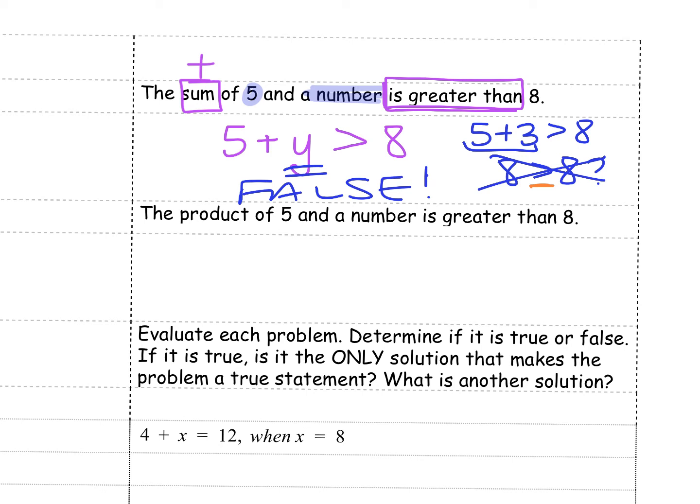And last but not least, the product, we know product means to multiply, of 5 and a number is greater than 8. So if we think about 5 times my variable, this time I'm going to use C greater than 8.